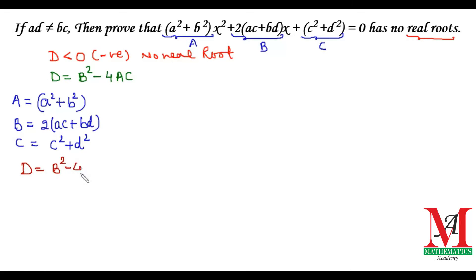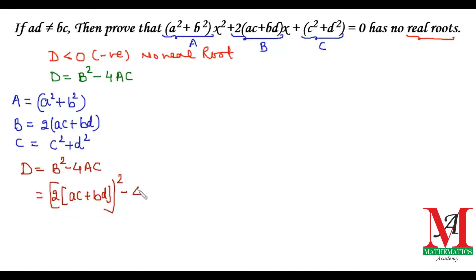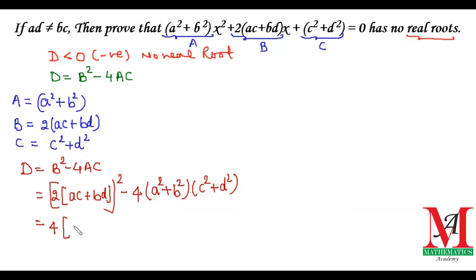Now we start to find the value of the discriminant D, which is b squared minus 4ac. On substituting the values, we get b as 2(ac + bd), so it becomes 2(ac + bd) whole square, minus 4 times a squared plus b squared, times c squared plus d squared. Expanding: 2 squared is 4, giving us a squared c squared plus b squared d squared plus 2acbd.